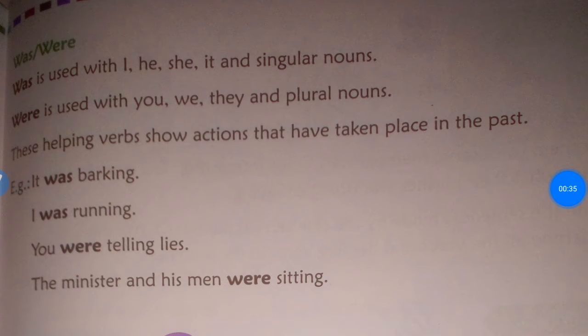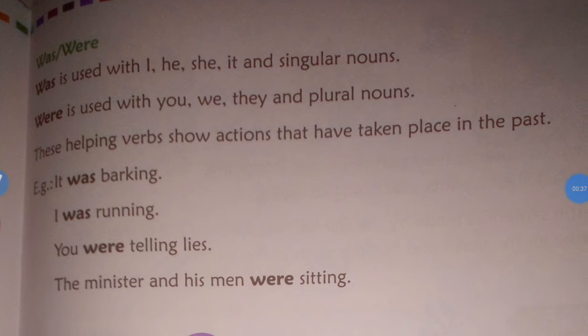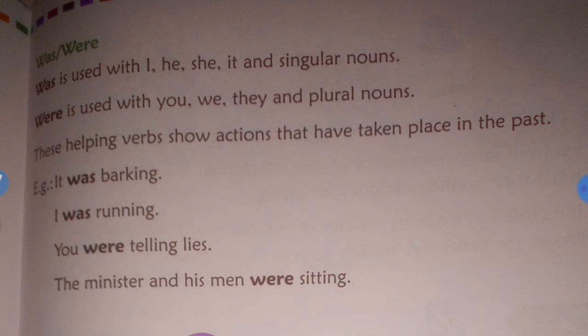Previously, we covered the present tense — what verbs are, what helping words are, and how to use them. Now in this session, we will learn to use 'was' and 'were'. 'Was' and 'were' are used where any action has already happened in the past — where a past action has taken place.